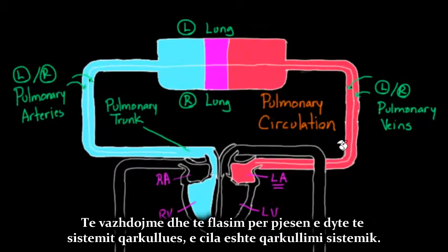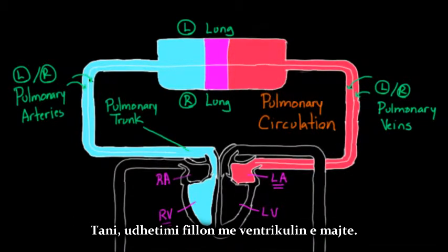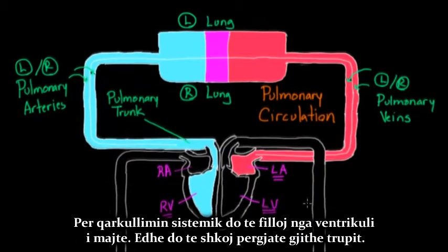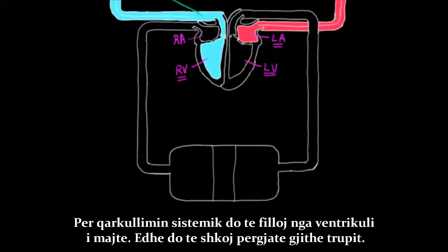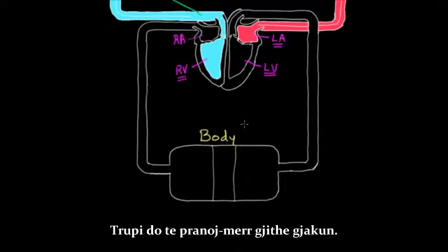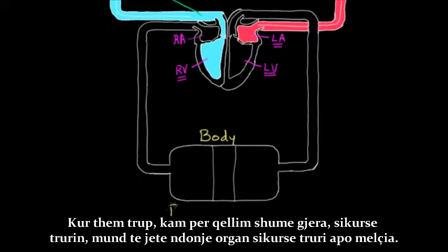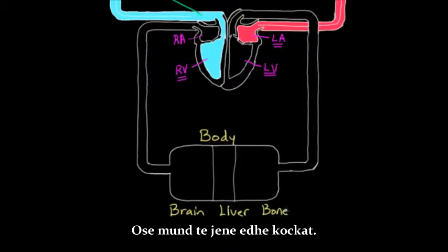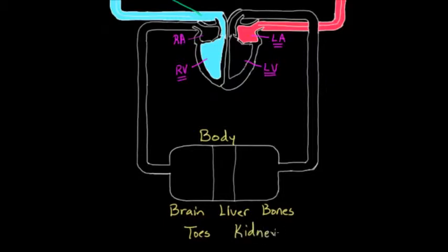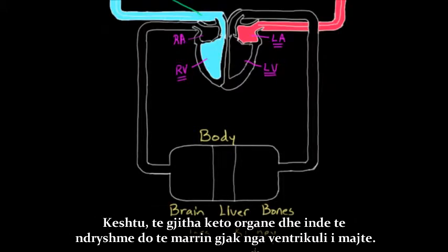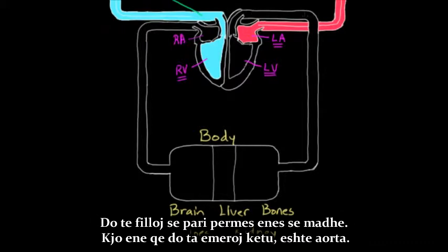Now let's talk about the second part of the circulatory system: the systemic circulation. The journey starts with the left ventricle. Blood goes around to the body — when I say body, I mean lots of things: organs like the brain or liver, bones, toes, fingers, any part of your body you can think of. All these different organs and tissues get blood from the left ventricle, going initially through a giant vessel called the aorta.